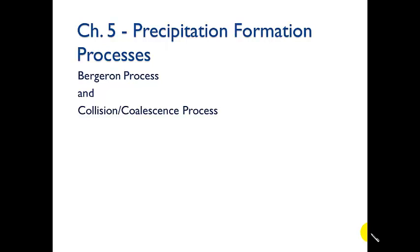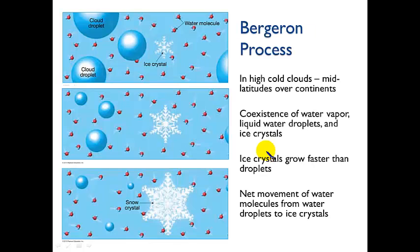Hi class. I wanted to talk a little bit about the processes that form precipitation in clouds. The two main processes that we're going to look at are the Bergeron process and the collision coalescence process. So let's start first with the Bergeron process.